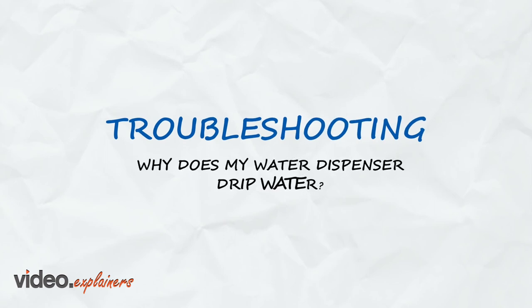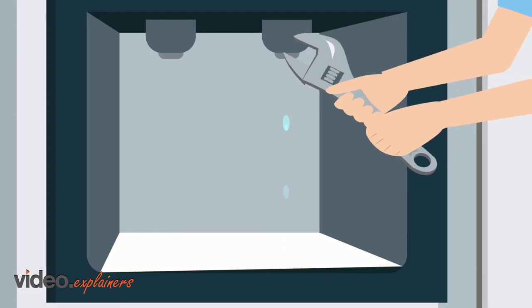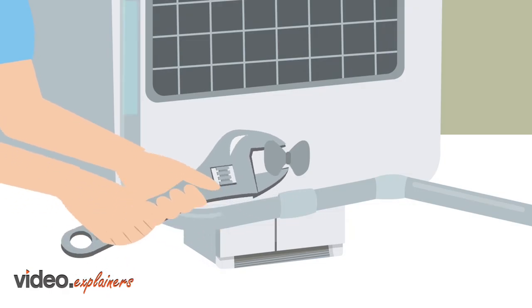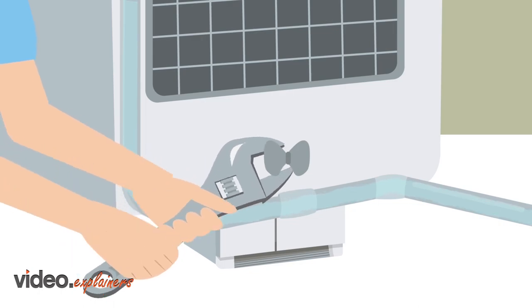Why does my water dispenser drip water? A few drops are normal, but if the dispenser drips water constantly, it could be a water valve problem and should be checked out by a service technician.